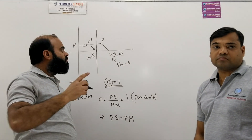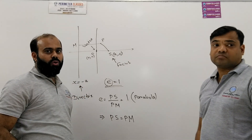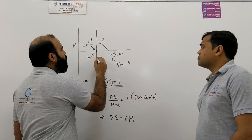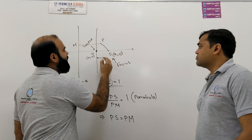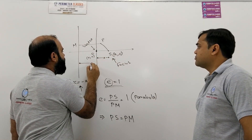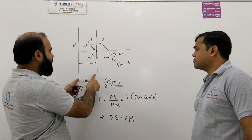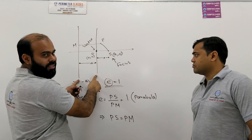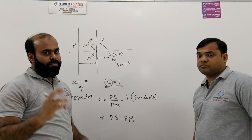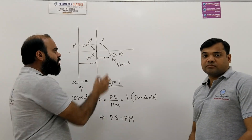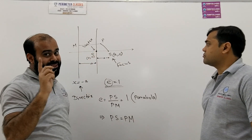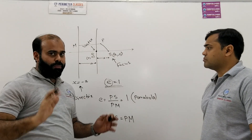One point we can immediately identify on the parabola is the origin, because the distance from the origin to the focus is 'a', and the distance from the origin to the directrix x = −a is also 'a' in magnitude. Both distances are equal, so the origin lies on the parabola — but there are many other points as well.